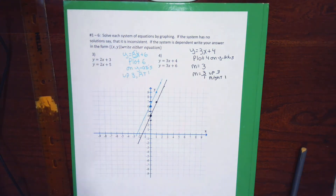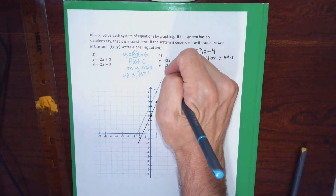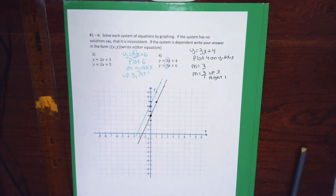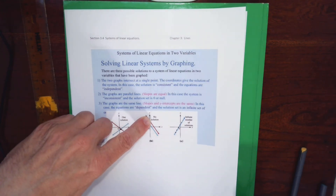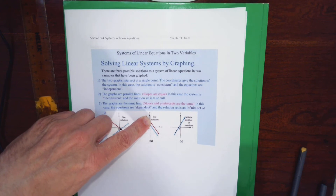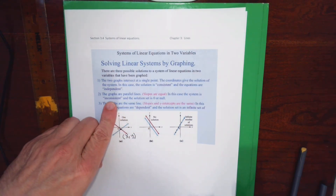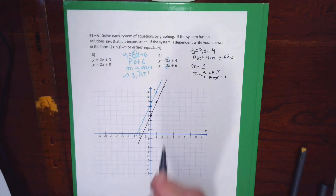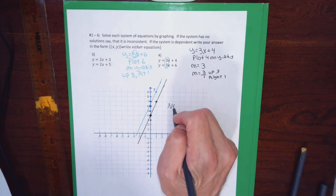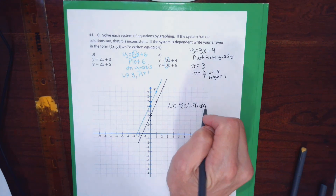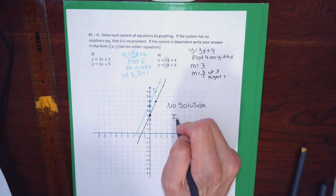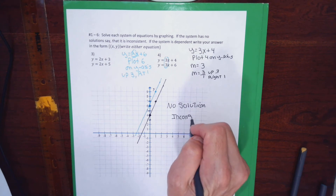Those lines are parallel, and I should have known they'd be parallel because both lines have the same slope — lines with the same slope are parallel. In this situation, there's no solution because the graphs never intersect. There's a mathematically precise way to say no solution: we say this is an inconsistent system of equations.